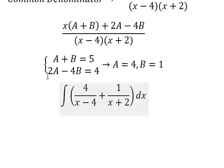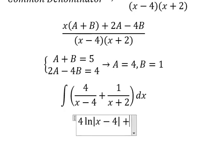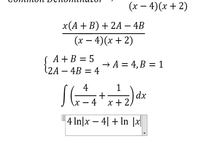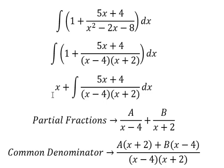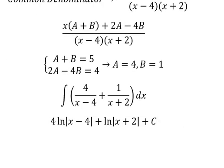The integration of this gives us 4 ln of the absolute value of x minus 4 plus ln of the absolute value of x plus 2. We add the constant C. We combine with x to get the final answer.